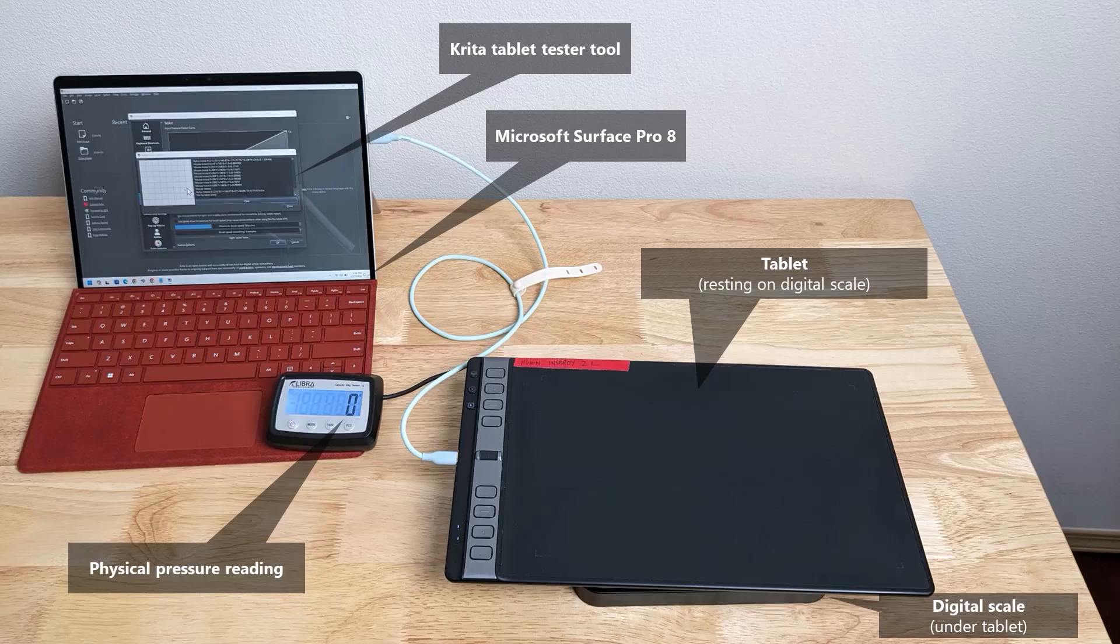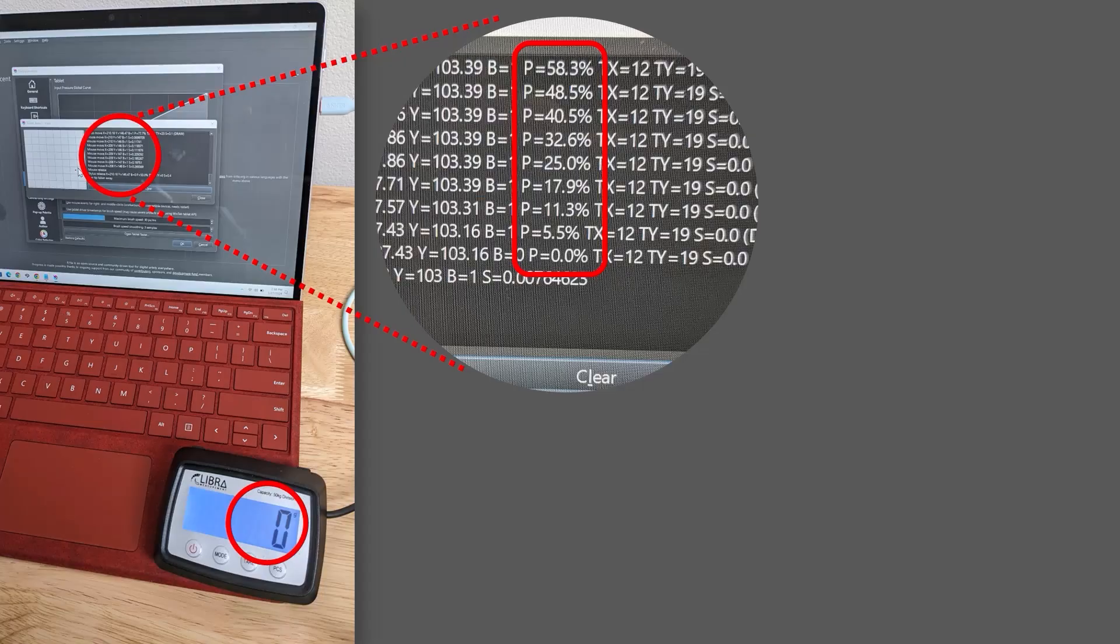So what I do is I very carefully press down with the pen on the tablet. And to be honest, I don't actually do that by hand. I built a contraption to help me hold the pen steady and apply steady pressure. But I'm not showing you that picture right now. As the pen is pressing down on the tablet, that force from the pen is also pressing down on the scale. And so I'm seeing two values. I see the logical pressure in the Krita Tablet Tester Tool, and then I see the physical pressure on the digital readout of the scale. And that's how we are able to map logical pressure to physical pressure.